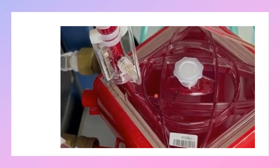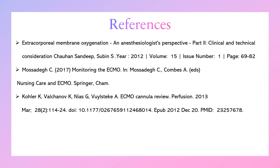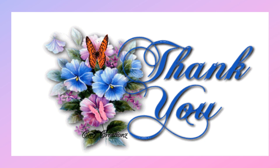We examined the oxygenator by flashlight and found no clots. At that point, we determined the problem was in the console itself, which needed to be recalibrated. We primed a new circuit, recalibrated the console, and it worked very well — all while the patient maintained normal oxygenation, normal ABG, and normal hemodynamics. References for this lecture include the ECMO workbook, and the pictures and videos are from my own clinical work. Thanks for watching — please post your comments and questions.